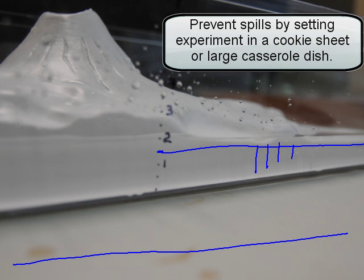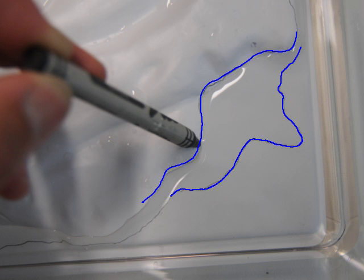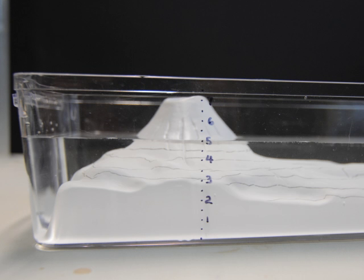To draw your contours, just draw with the crayon along the edge of the water wherever it's touching — draw right along there. You can see I've already done one contour, which was where I first had enough water to see a contour to draw. Remember, contour lines that are closely spaced indicate a steep section, while lines spaced far apart indicate a fairly flat section. Continue filling up, stopping every half-centimeter and drawing your contour lines around.